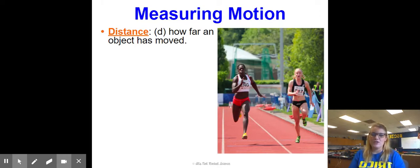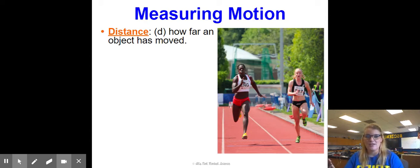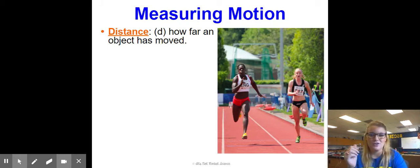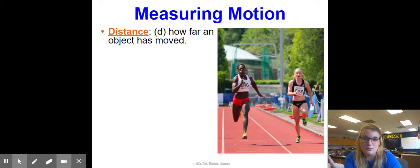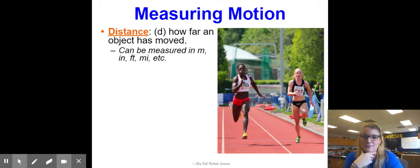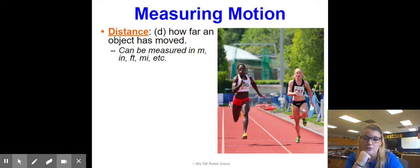To measure motion, the first thing we use is distance, represented with the letter D — that's just how far an object has moved. Think about distance like a Fitbit: it always measures your steps. Even if you were marching in place, it would count those steps. It doesn't care where you went, just that you were in movement for a certain number of steps. Distance can be measured in meters, inches, feet, or miles. Our standard unit in science is meters.